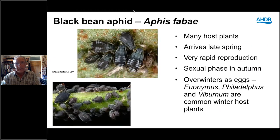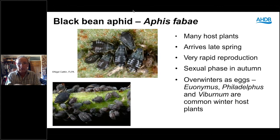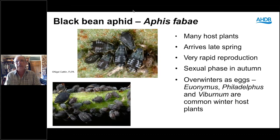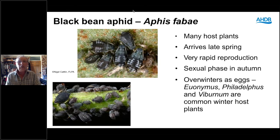The black bean aphid has a single name but a phenomenal range of host plants. It does have a sexual phase in the autumn and overwinters predominantly on Euonymus europaeus — the spindle tree — the most common host plant for overwintering. We also find it on Philadelphus and Viburnum. If you've got any of those plants near the nursery, you're going to get black bean aphid every year.